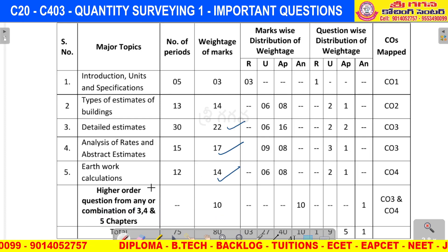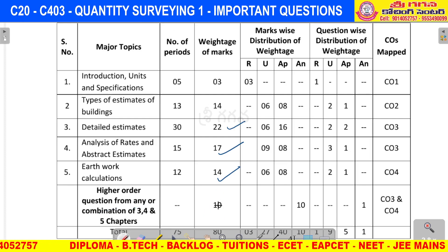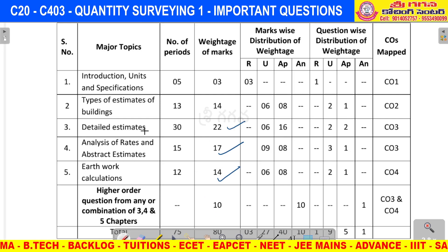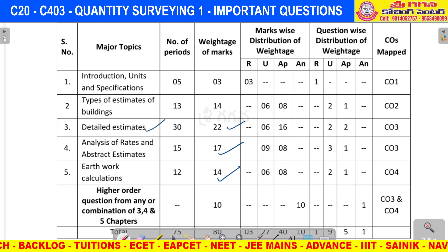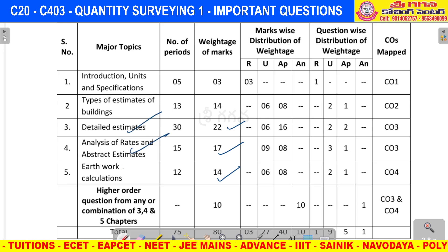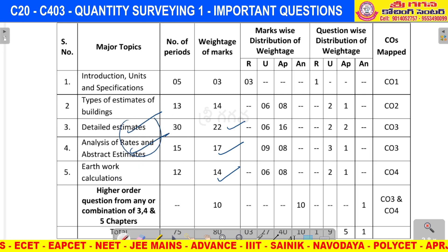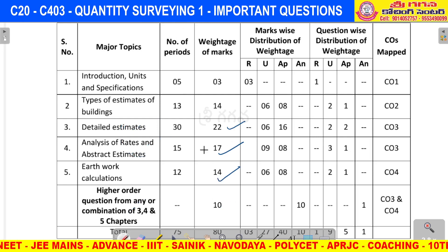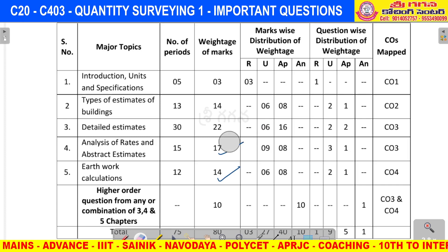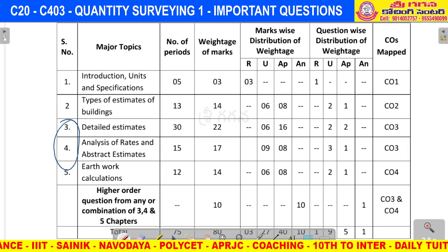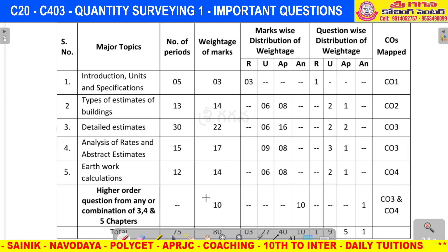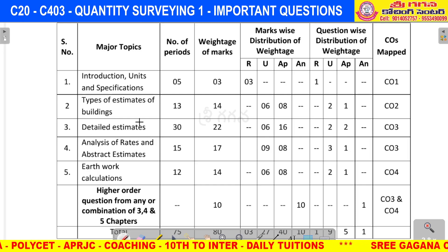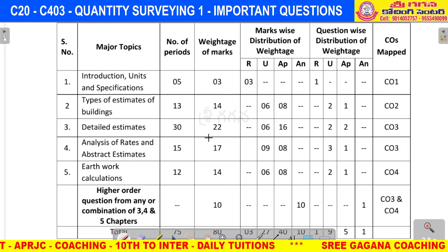If you add 10 marks from the second unit, that becomes 53 plus 10 equals 63 marks. So by focusing on units 3, 4, and 5, you can easily gain 40 to 45 marks and comfortably pass the exam.